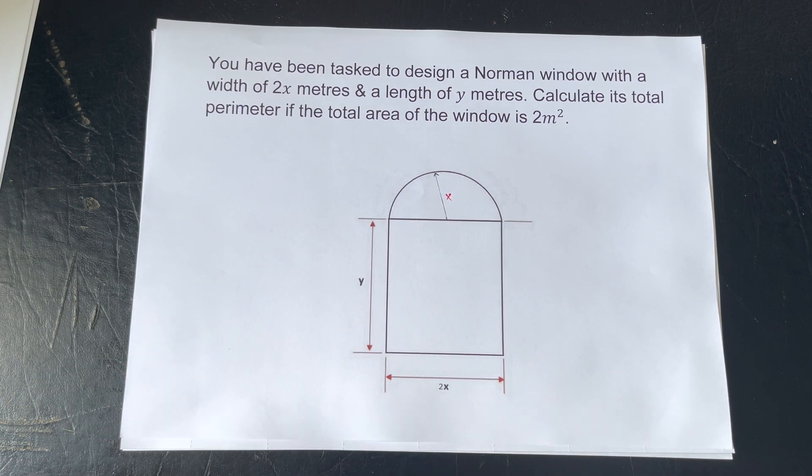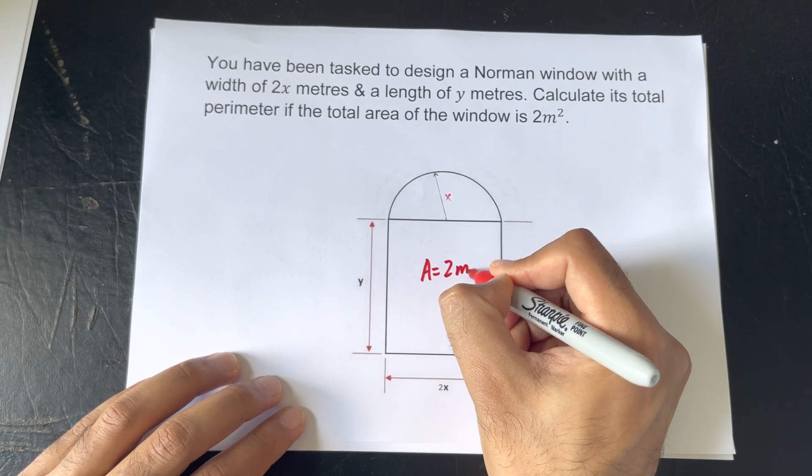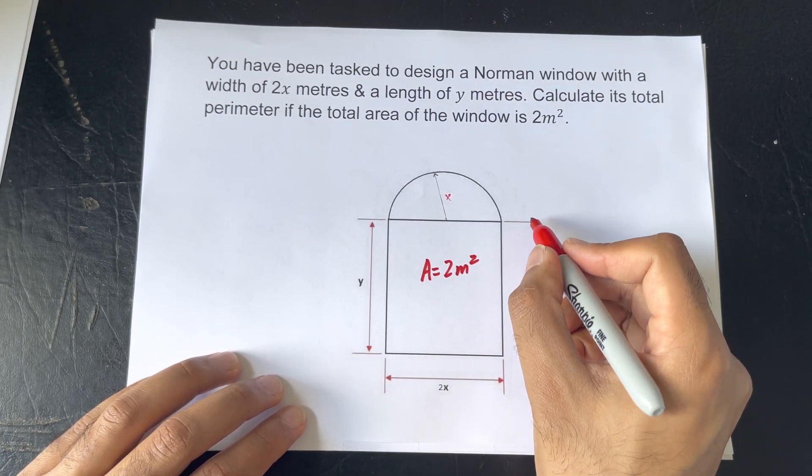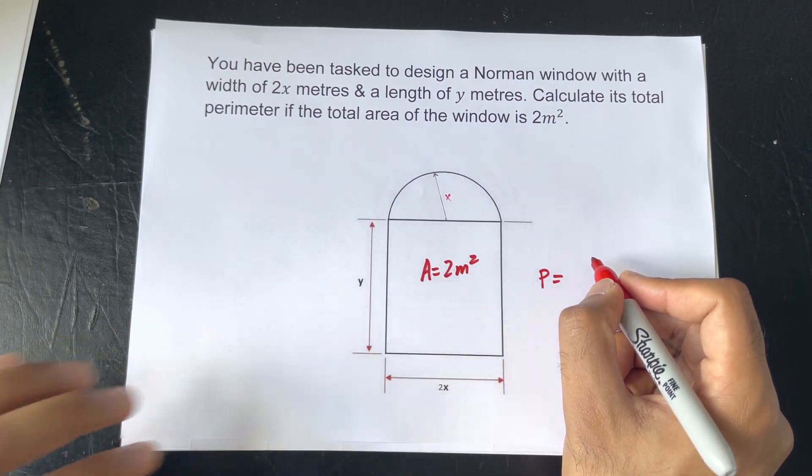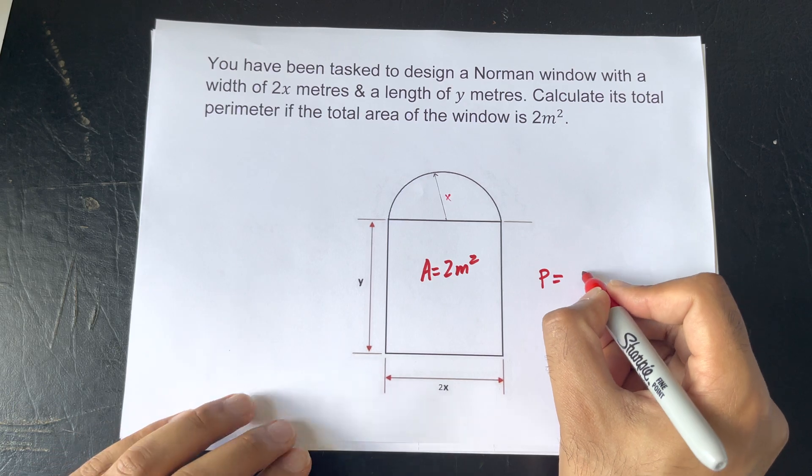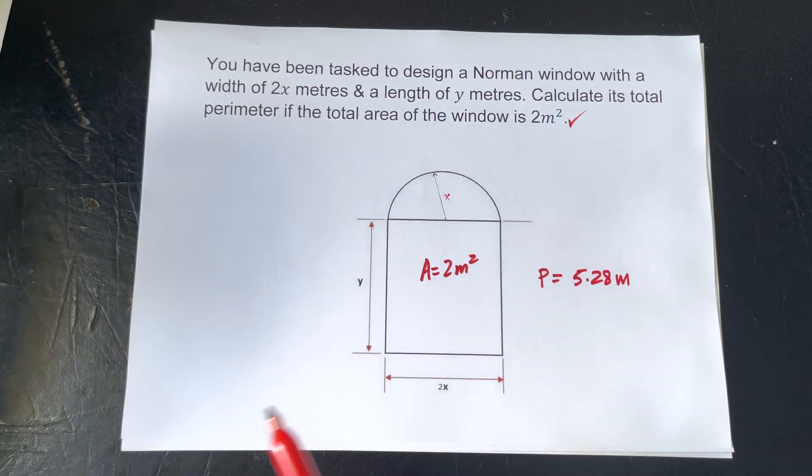So, judging from this diagram, we have an area being equal to 2 meters squared. The perimeter is equal to 5.28 meters. And that is how you would answer the question. Thank you.